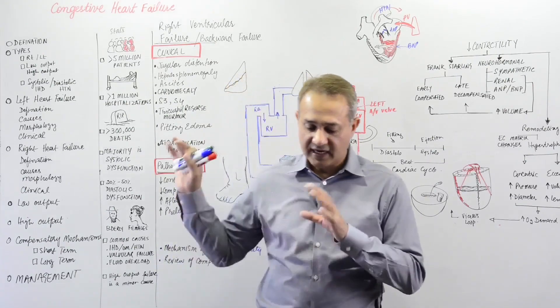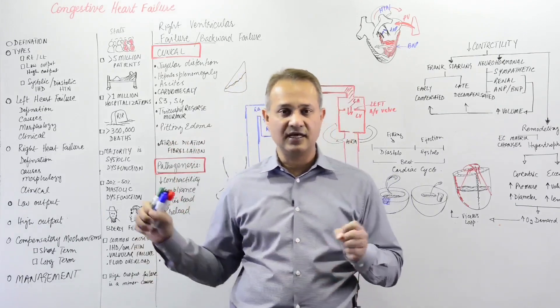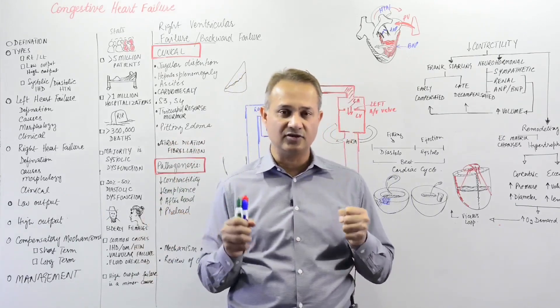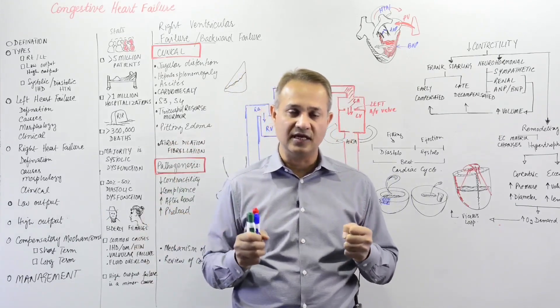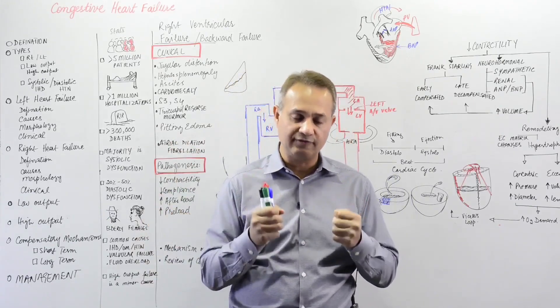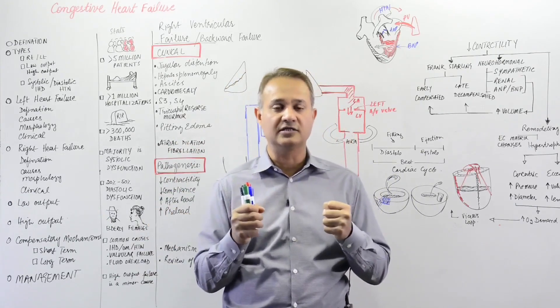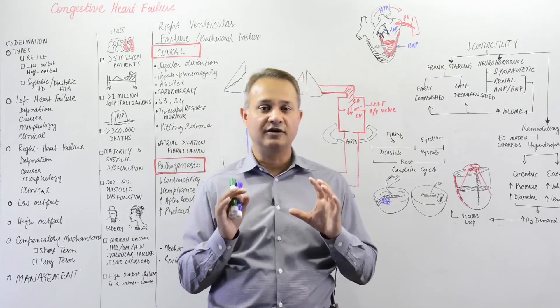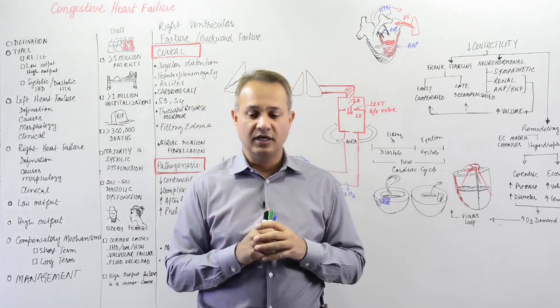High output failure is a minor category that normally occurs in hyperthyroidism or in wet beriberi, which we'll discuss shortly. So those are the key stats, which should tell you that as a doctor or health professional you must have a good command on the cardiovascular system.